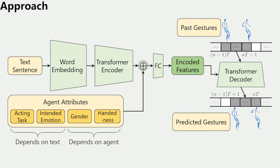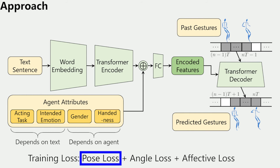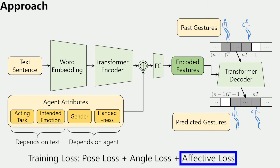We train this full network using three losses: the pose loss, which is the difference between our generated 3D positions and the corresponding ground truth joint positions at every timestep; the angle loss, which is the difference between our generated joint rotations for forward kinematics and the corresponding ground truth joint rotations at every timestep; and the affective loss, which is the difference between our generated affective features and the corresponding ground truth affective features at every timestep.